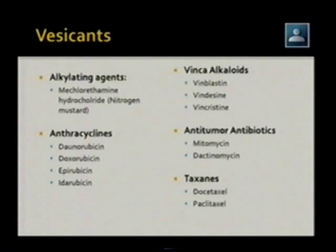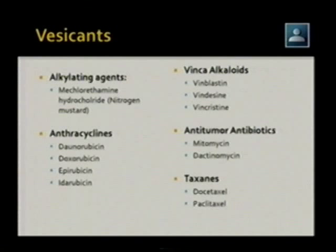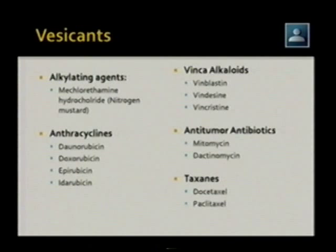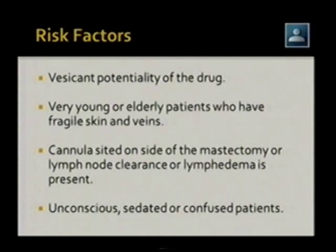Doxorubicin is one of the most potent vesicants among all chemotherapeutic agents. The vinca alkaloids — vinblastine, vindecine, and vincristine — are also vesicants, as are anti-tumor antibiotics like mitomycin and dactinomycin, and taxanes like docetaxel and paclitaxel. The two drug classes with the highest risk of extravasation are anthracyclines and vinca alkaloids, so it is important that anyone administering these agents follows the established guidelines.